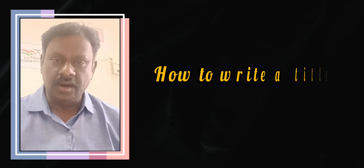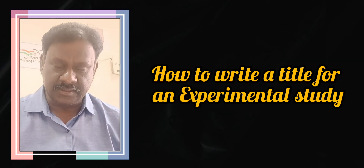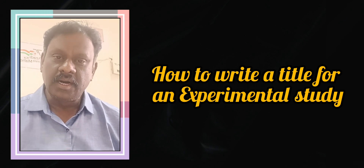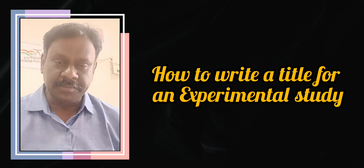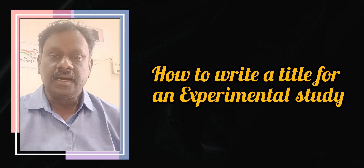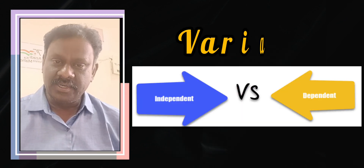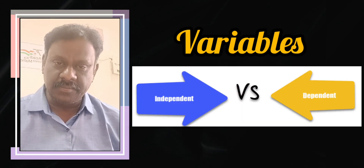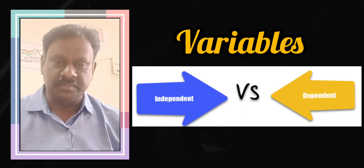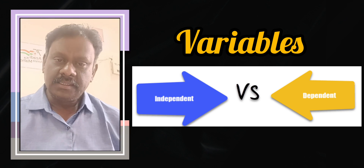Dear students, I welcome you to this video on how to write a title for an experimental study. In an experimental study, there are two variables which play an important role: one is the independent variable, and another one is the dependent variable.